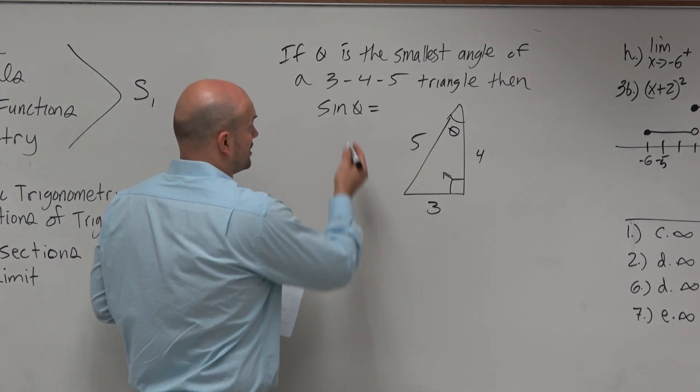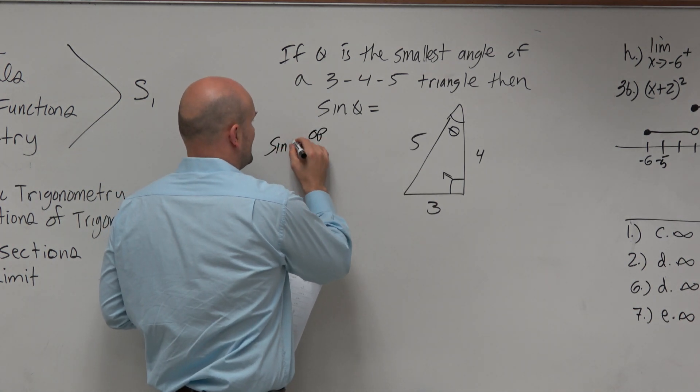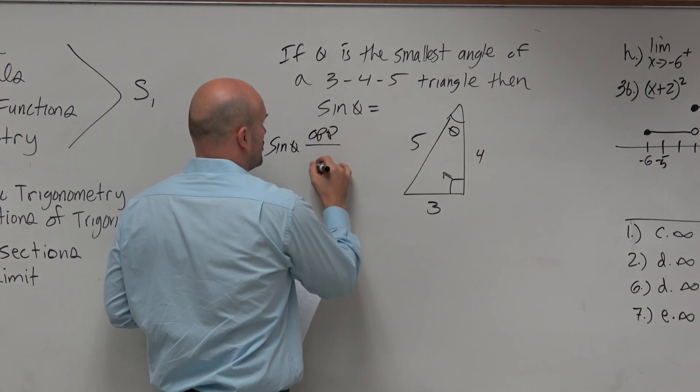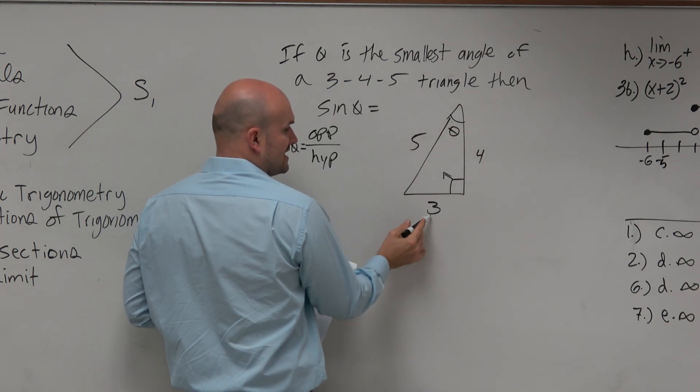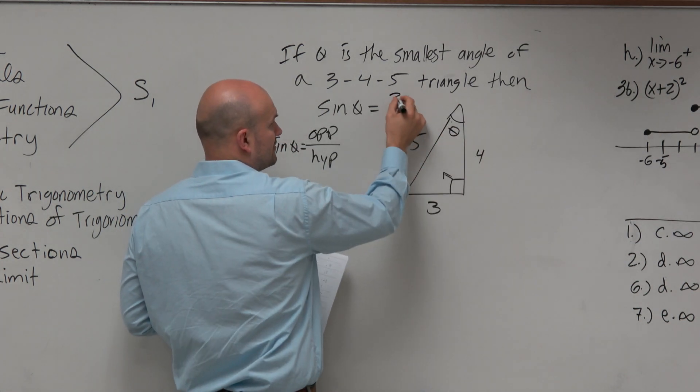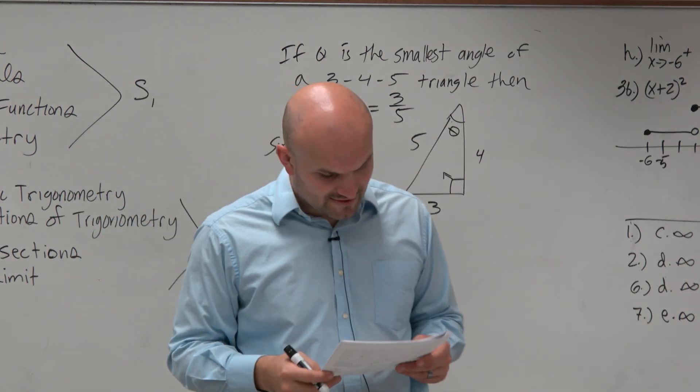Now we just need to figure out sine of theta. Remember, sine of any angle is opposite over hypotenuse. Here, the opposite side is 3, and the hypotenuse is 5. So the sine of theta is 3/5.